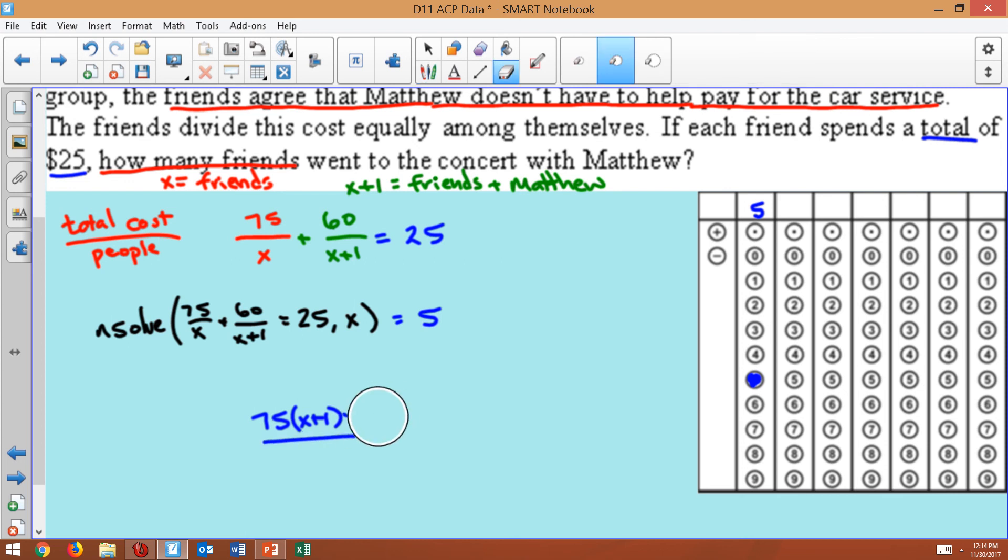So this would be it multiplied by X plus one. And X plus one on top and bottom. Oh, I'm sorry. Easier way of doing this is multiply everything by X plus one times X.